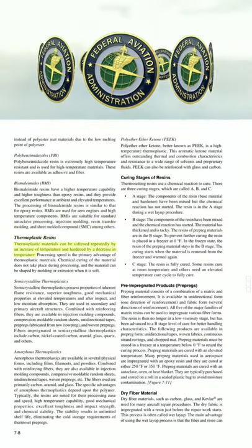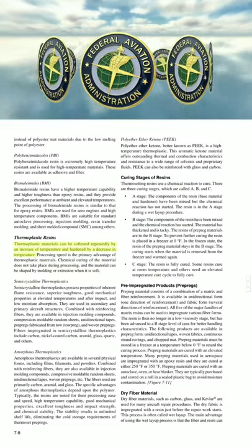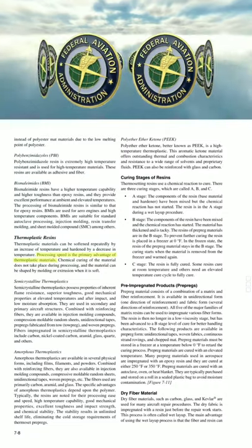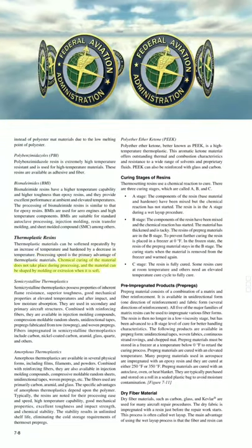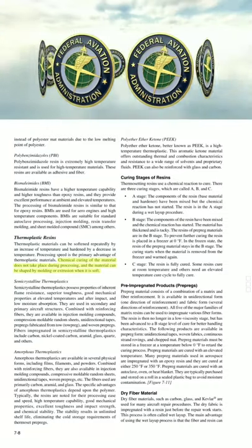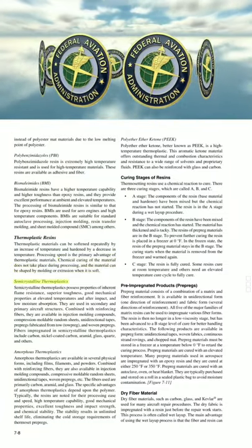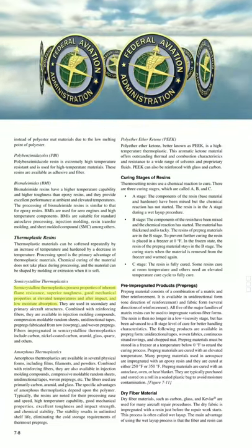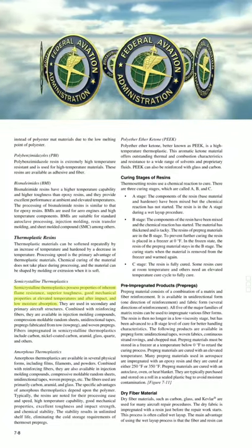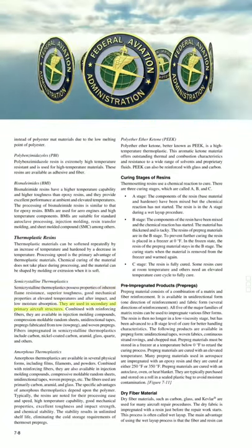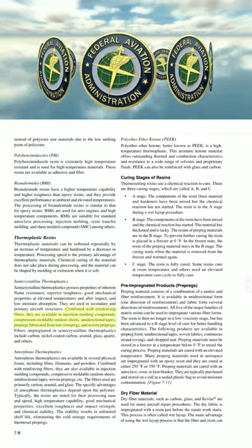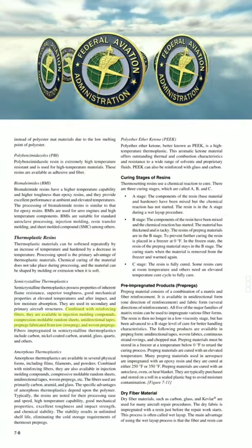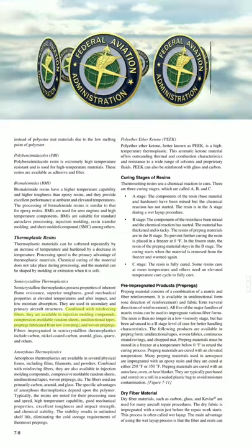Thermoplastic resins. Thermoplastic materials can be softened repeatedly by an increase of temperature and hardened by a decrease in temperature. Processing speed is the primary advantage. Chemical curing does not take place during processing, and the material can be shaped by molding or extrusion when soft. Semi-crystalline thermoplastics possess inherent flame resistance, superior toughness, good mechanical properties at elevated temperatures and after impact, and low moisture absorption. They are used in secondary and primary aircraft structures. Combined with reinforcing fibers, they are available in injection molding compounds, compression moldable random sheets, unidirectional tapes, towpreg fabricated from tow, and woven prepreg.